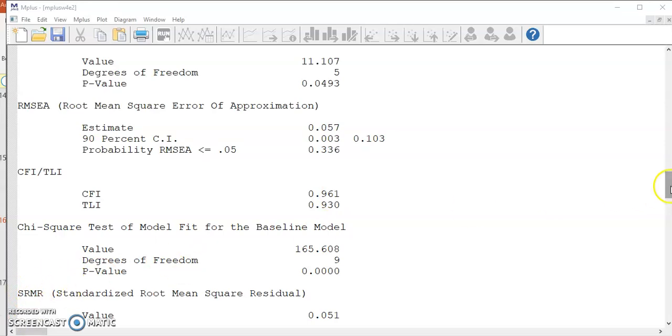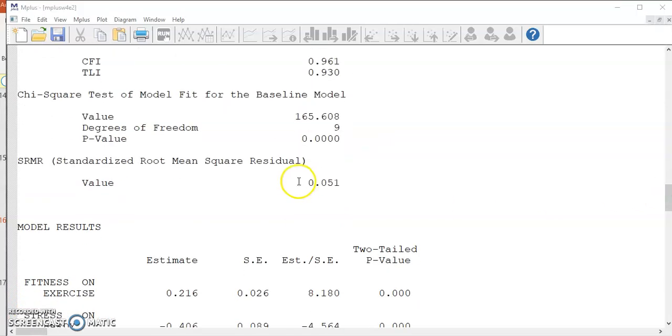For SRMR, the smaller the value is, the better the model fit. It has a guideline value of 0.08. For this model, the SRMR is 0.05, which is lower than 0.08. So we have a good model fit.